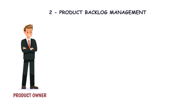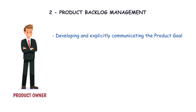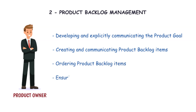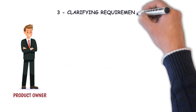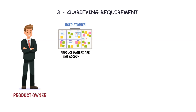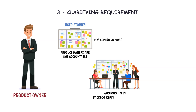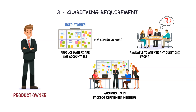As the Scrum Guide says, a product owner is accountable for developing and explicitly communicating the product goal, creating and communicating product backlog items, ordering product backlog items, and ensuring that the product backlog is transparent, visible, and understood. Lastly, clarifying requirements — product owners are not accountable for writing user stories and acceptance criteria; it is done collectively by the Scrum team, where developers do most. Product owners participate in product backlog refinement meetings to help everyone understand backlog items by communicating purpose and answering developers' questions, and are available to answer any questions from developers during development to meet the sprint goal.